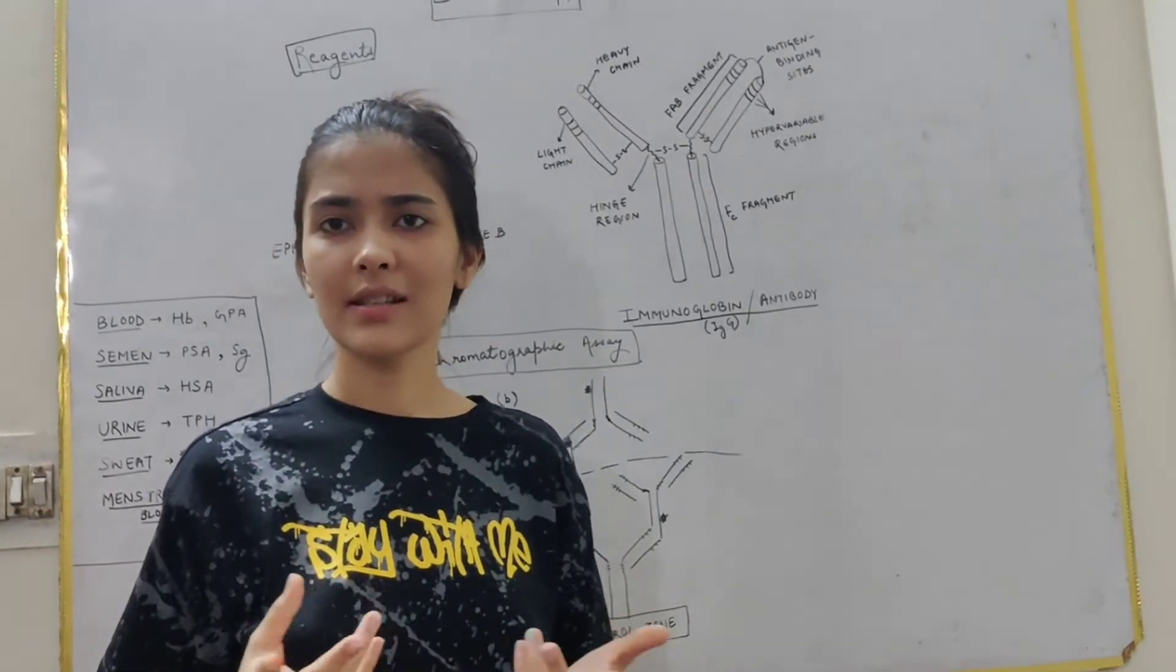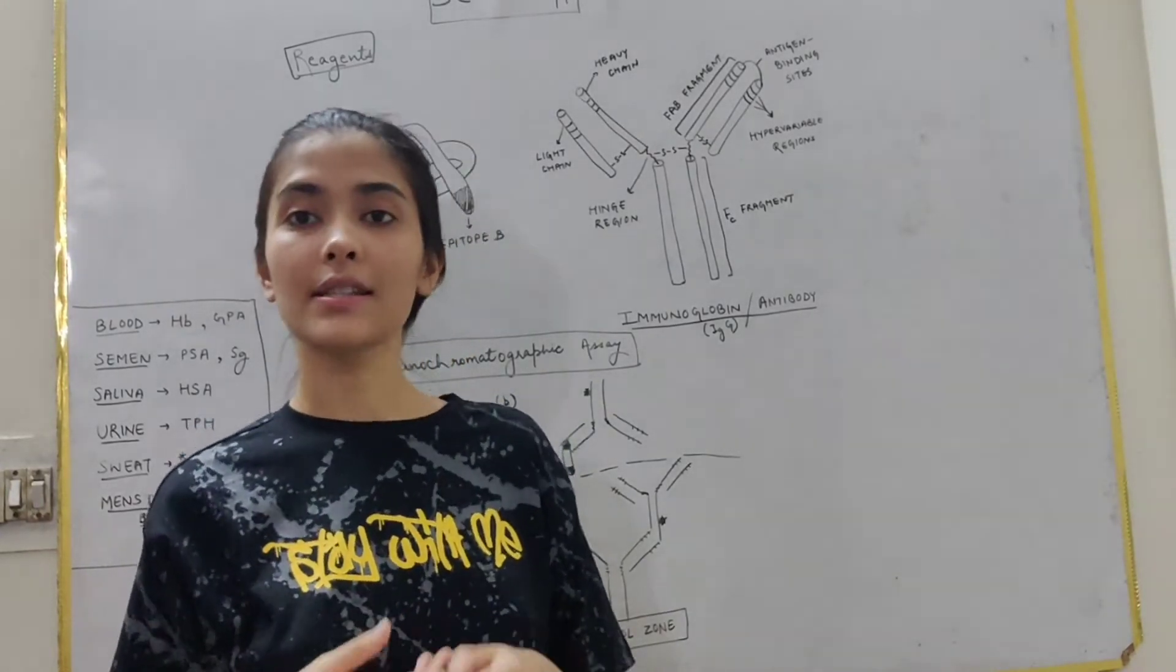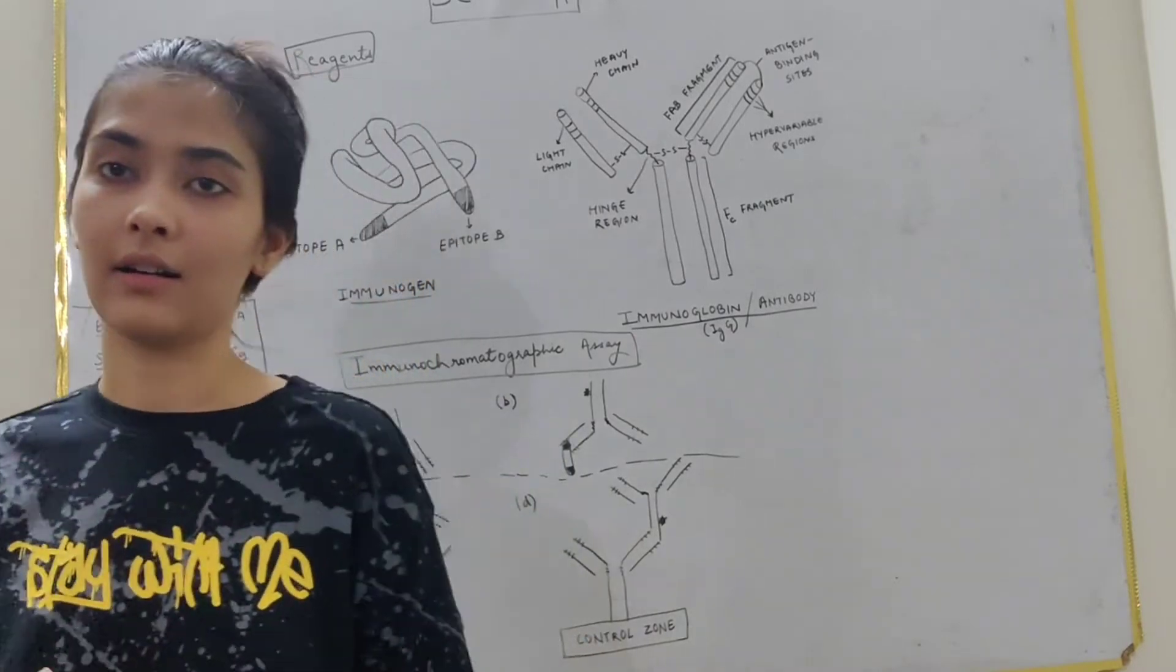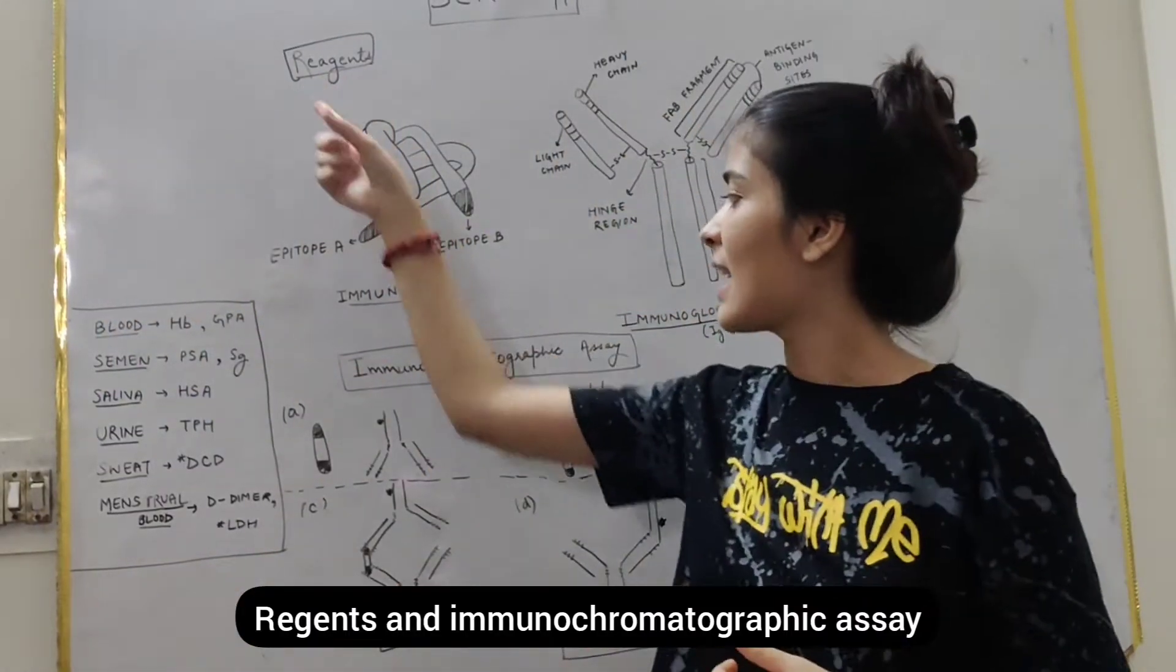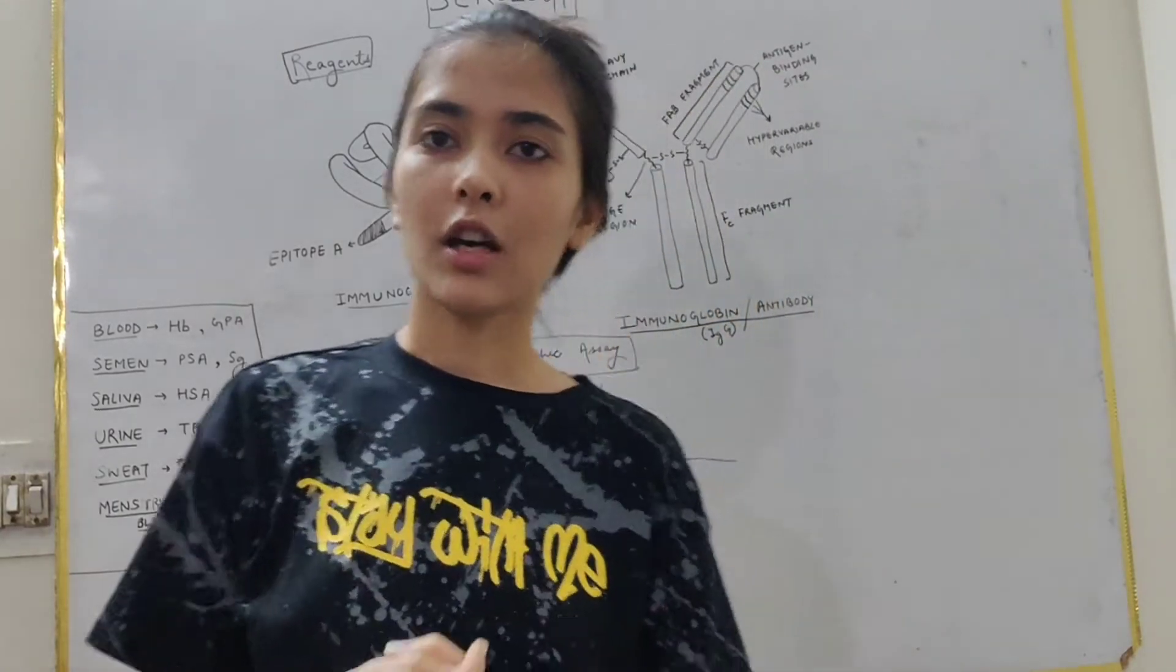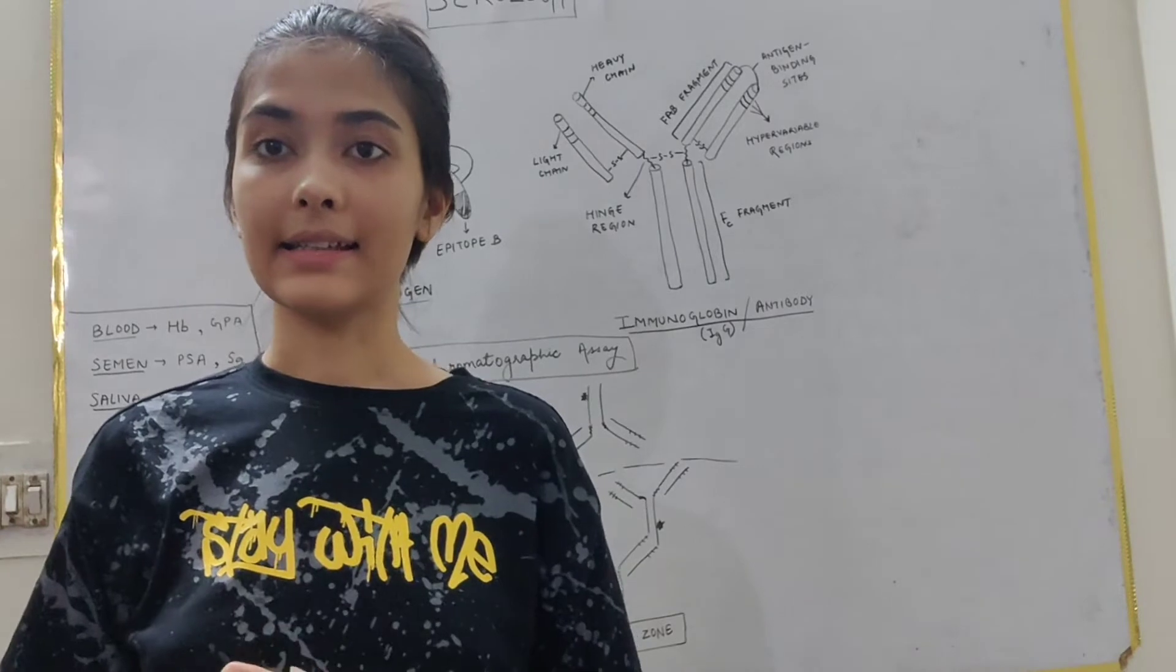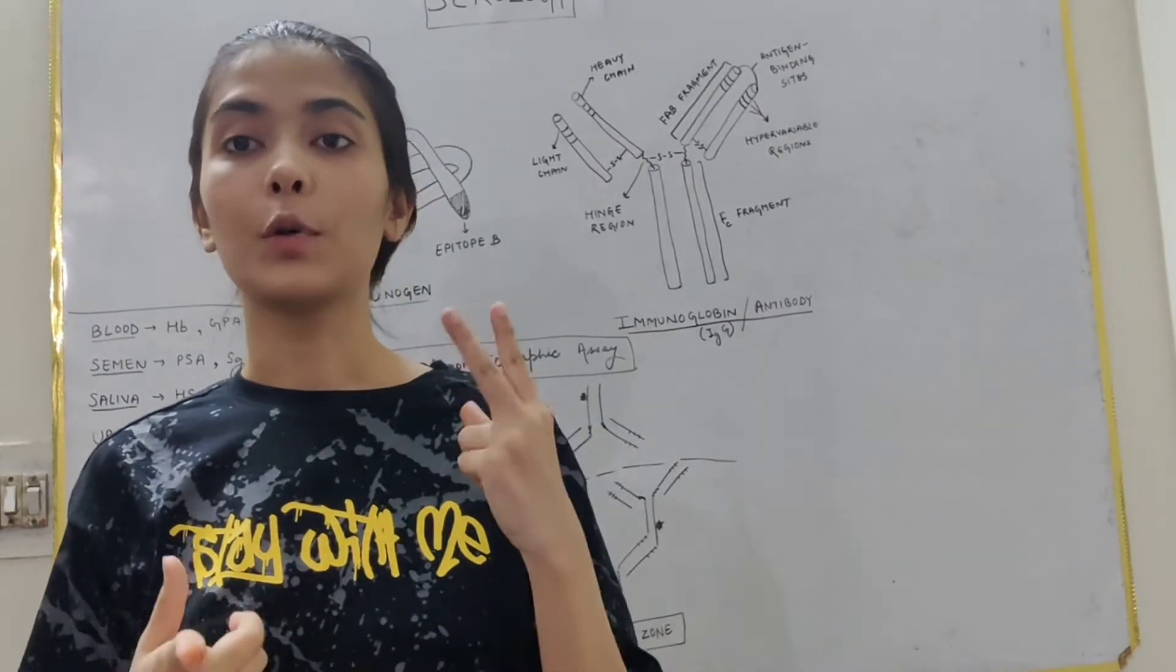Now I am not going to discuss the complete branch in our video. I am going to take a chunk of serology and today we are going to discuss the reagents and immunochromatographic assay. First we will talk about reagents. We have two reagents in serology, that is the immunogen and immunoglobulin.